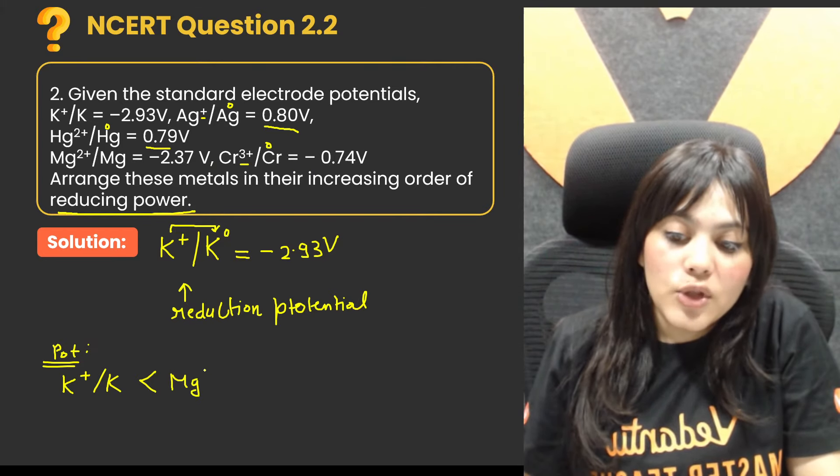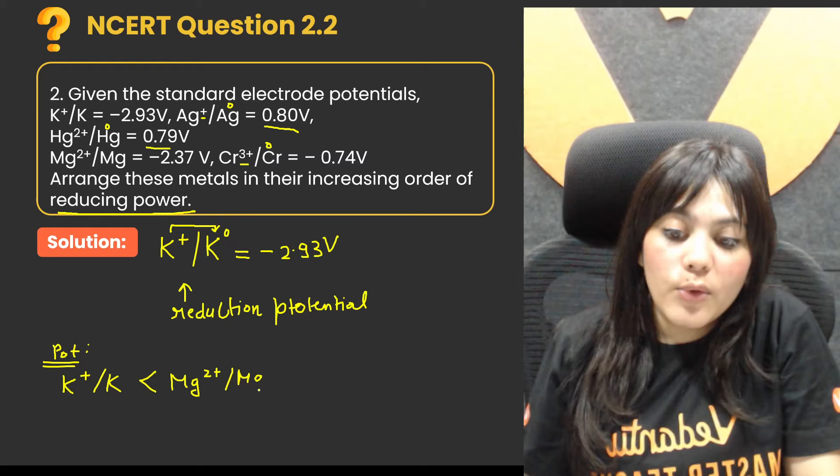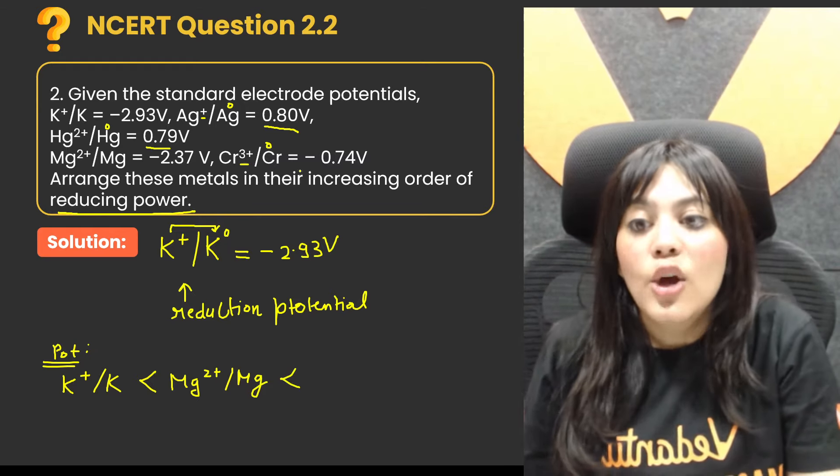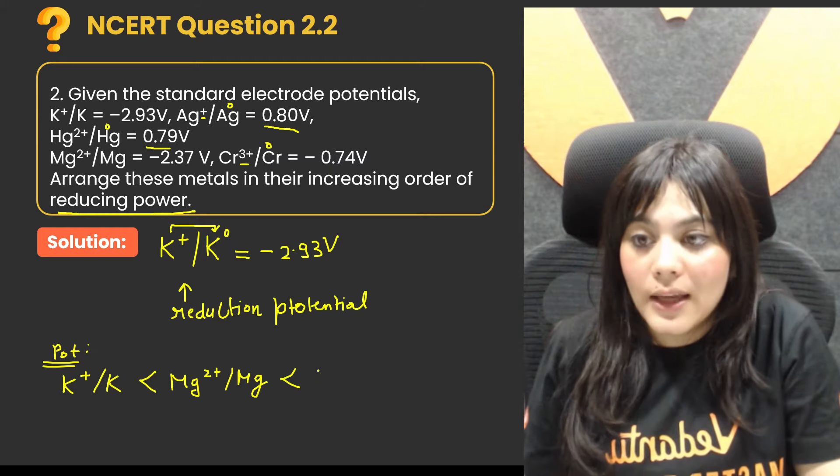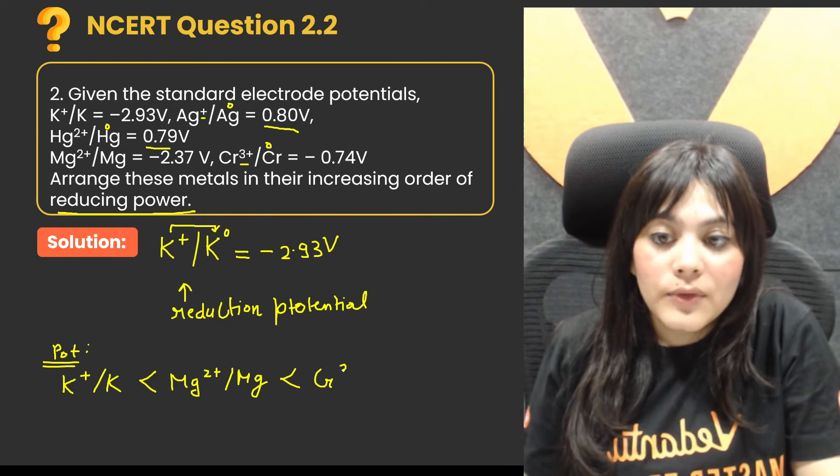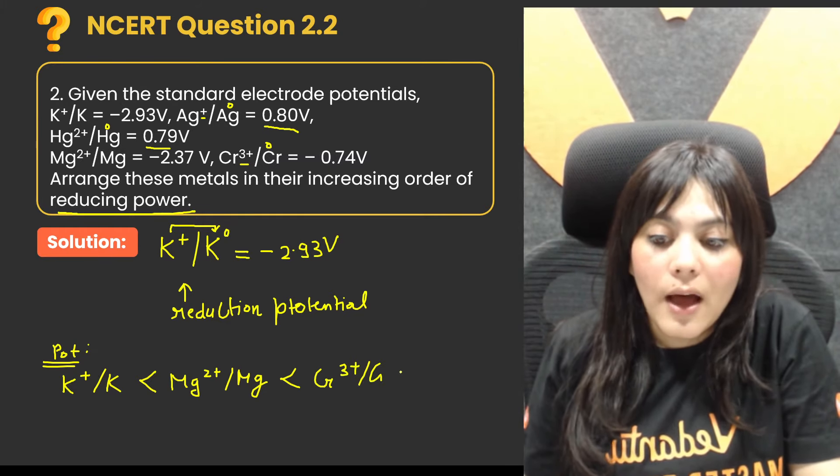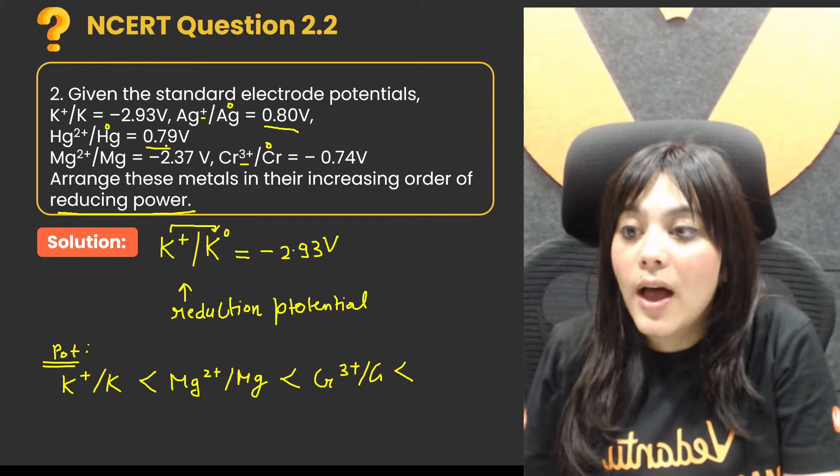Mg2+/Mg has more reduction potential than K+. More reduction potential is your chromium 3+/chromium. More reduction potential than that is your Hg2+/Hg.